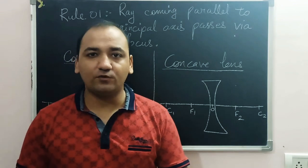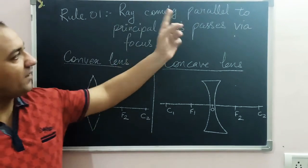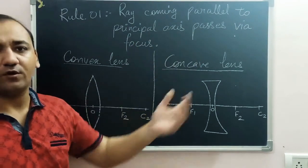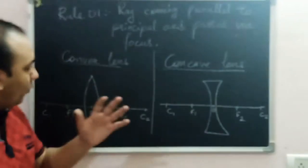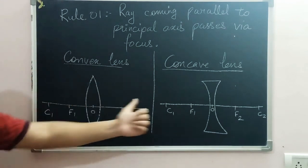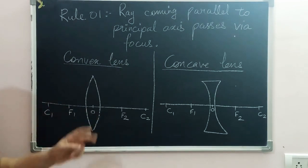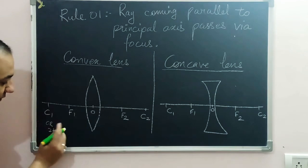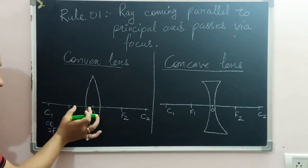Let's start with the very first rule of ray diagram formation. Rule number one says that when a ray is coming parallel to the principal axis, it will pass through the focus. Let's understand this rule with the help of two types of lenses. First, the convex lens — with optical center, f1 as the first focus, and c1 as the center of curvature, which can also be written as 2f1.